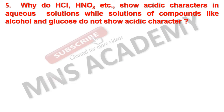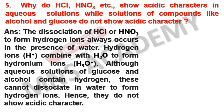Why do hydrochloric acid, nitric acid, sulphuric acid, etc. show acidic character in aqueous solution while solutions of compounds like alcohol and glucose do not show acidic character? The dissociation of hydrochloric or nitric acid to form hydrogen ions always occurs in the presence of water. Hydrogen ions combine with water to form hydronium ions. Although aqueous solutions of glucose and alcohol contain hydrogen, these cannot dissociate in water to form hydrogen ions. Hence, they do not show acidic character.